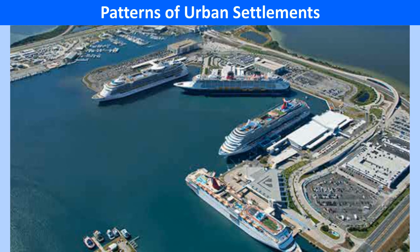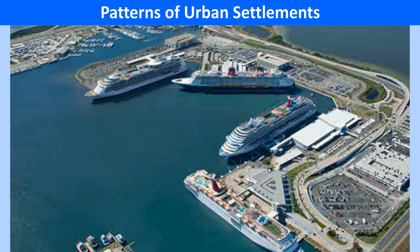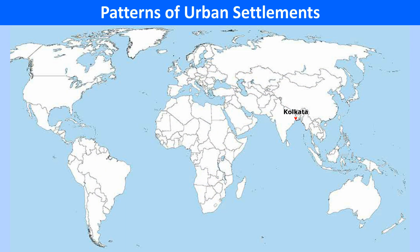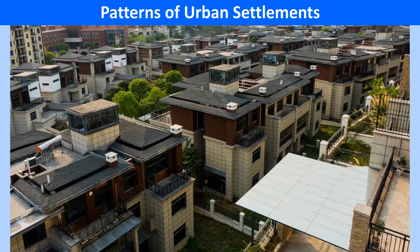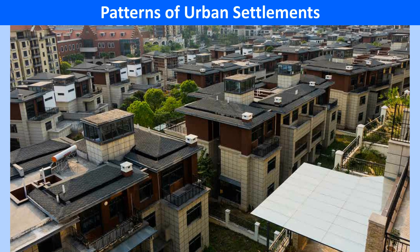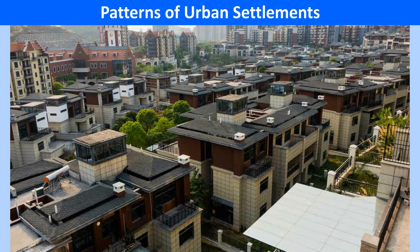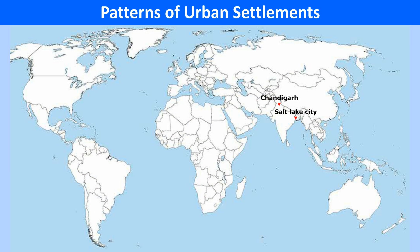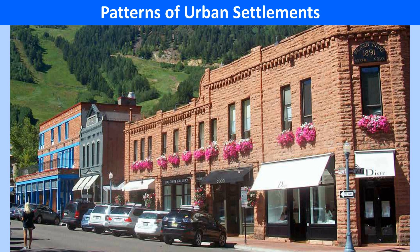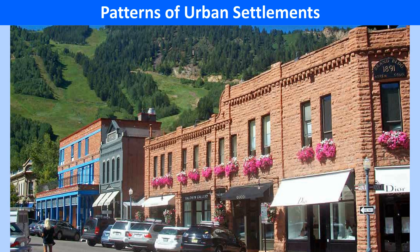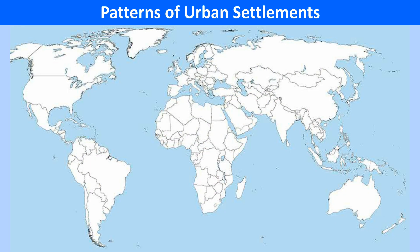Port towns on the coast may come up where a natural harbor exists. These include towns like Kolkata, Singapore, Mumbai, London, etc. Residential towns refer to the suburbs and small towns which serve as the residence of a large population, like Chandigarh and Salt Lake City, India. Resort towns cater to the recreational needs of the people and are famous centers of tourist attraction — for instance, St. Moritz, Switzerland; Darjeeling, India; Nainital, India; Ooty, India, etc.